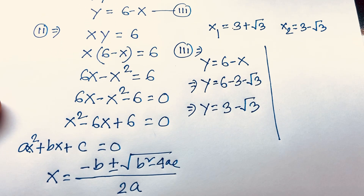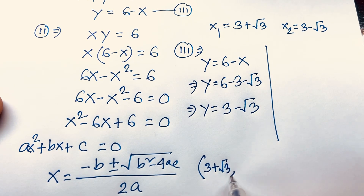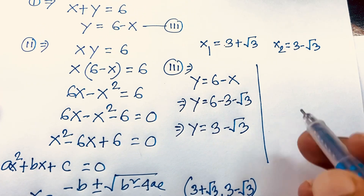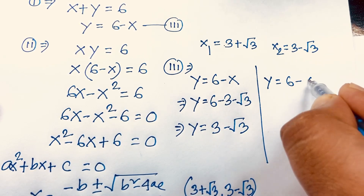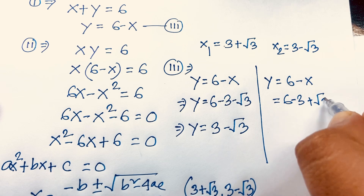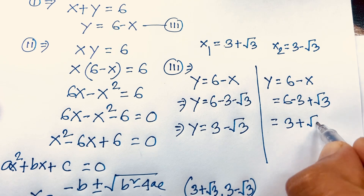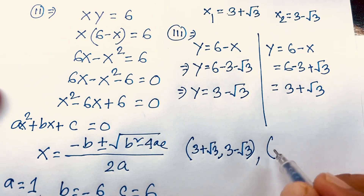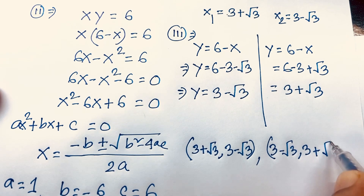So when x equals 3 plus square root 3, y equals 3 minus square root 3. And when x equals 3 minus square root 3, y equals 6 minus (3 minus root 3), which gives y equals 3 plus square root 3. These are our two solution pairs.